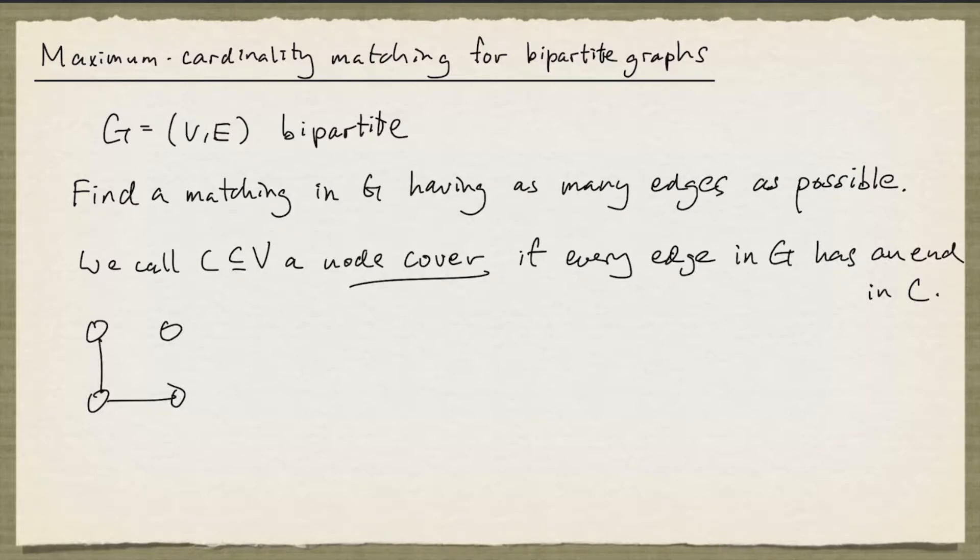So for example, if this is my graph, then taking these two nodes and put them in C, then C will be a node cover. Now this edge happens to have both ends in C, and that's fine.